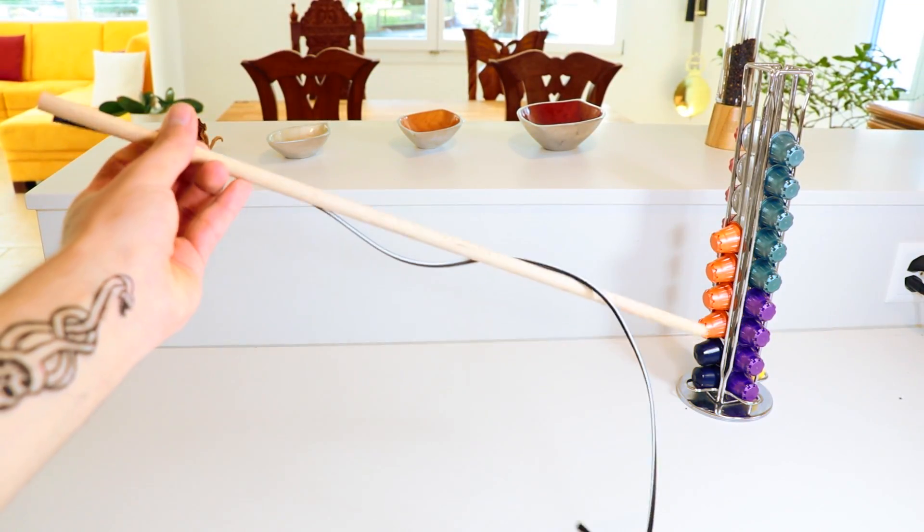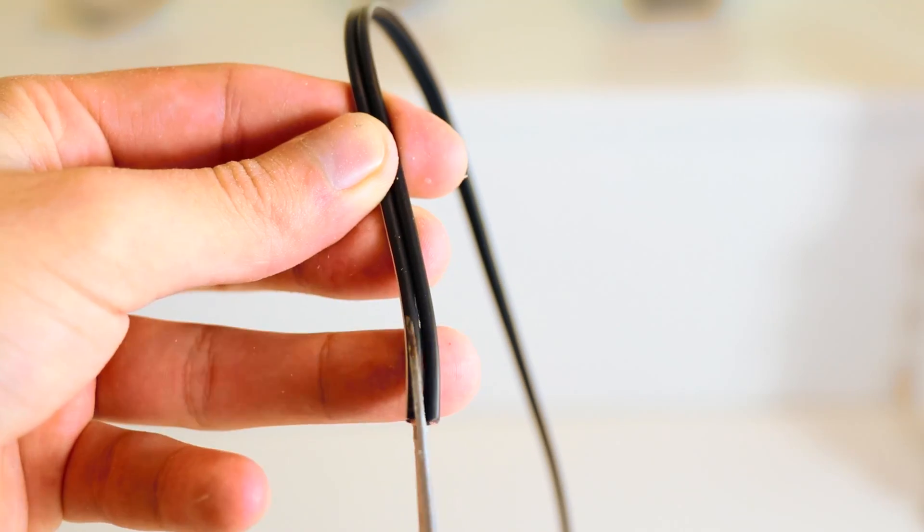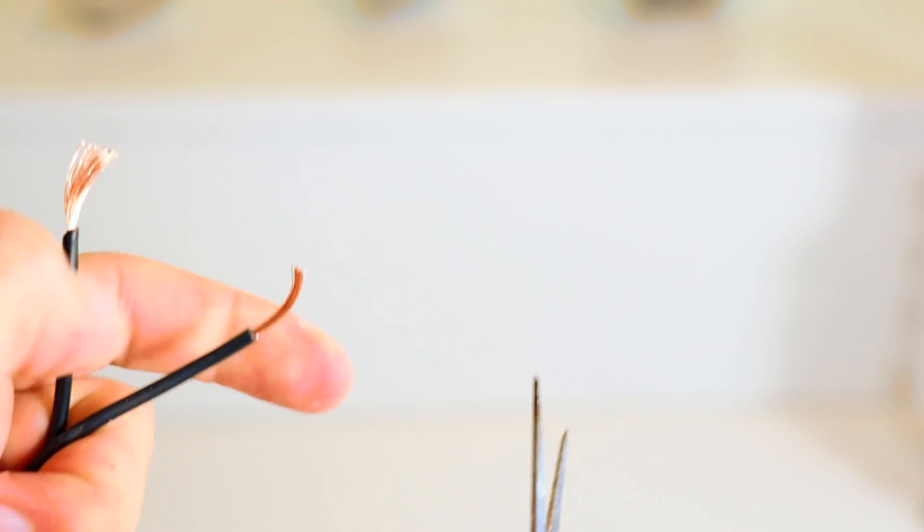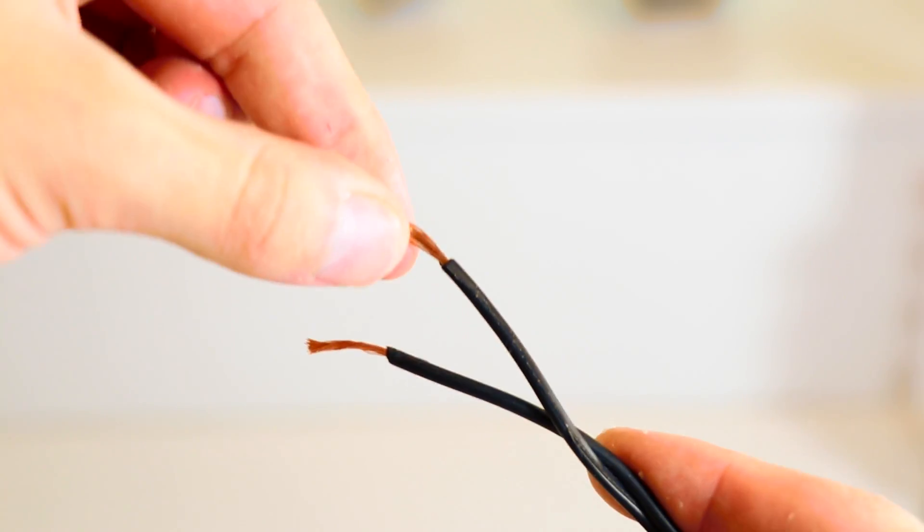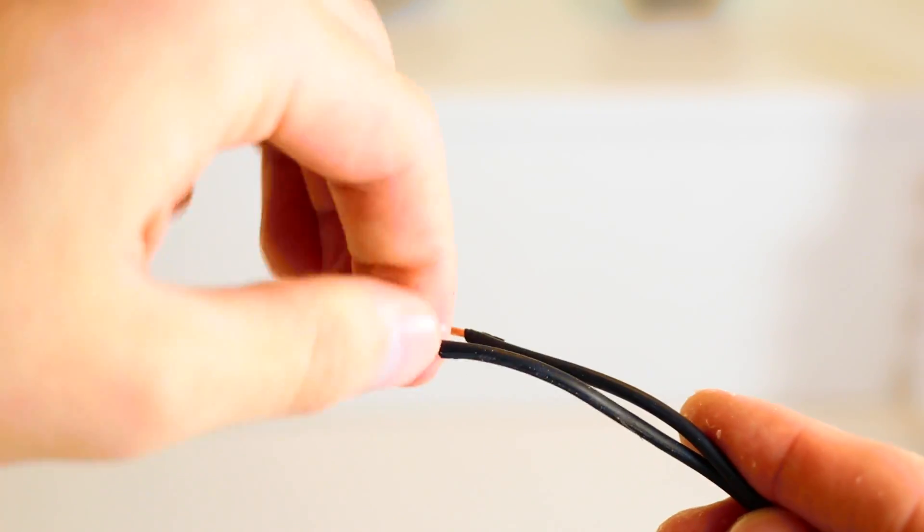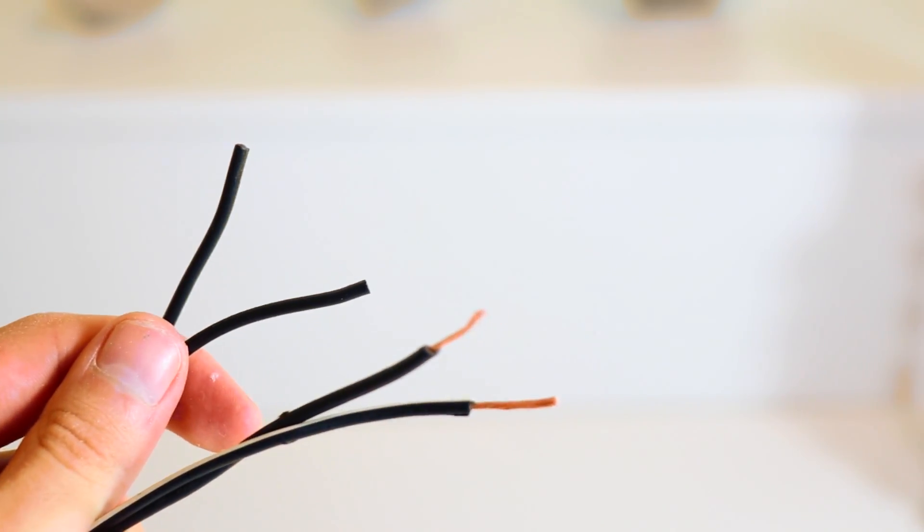Then take a piece of wire a bit longer than the dowel and split the ends. Then strip back a small portion of the wire and twist them up like so. And repeat the same thing on the other side.